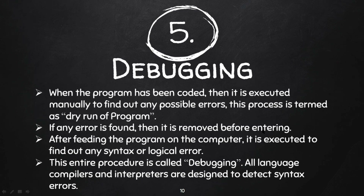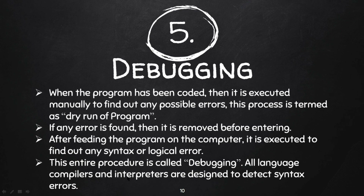If any error is found during the dry run, it is removed before entering. That is debugging. After feeding the program to the computer, it is executed to find any syntax or logical error. If you click on the run button, it will display logical errors as well as syntax errors. All programming compilers and interpreters are designed to detect syntax errors. QBasic uses an interpreter and C programming uses a compiler to convert your program into computer-understandable code.